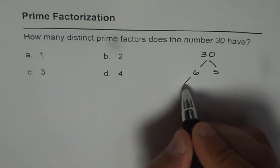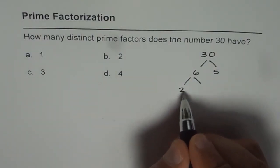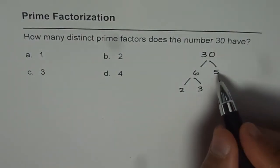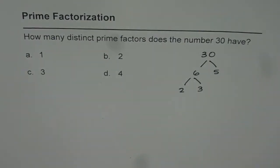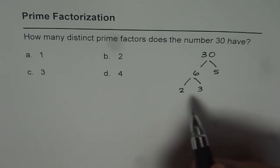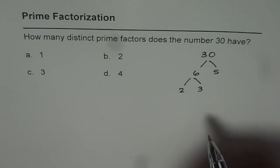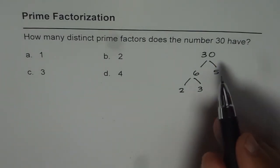Now 6 has factors 2 times 3. 5 itself is a prime number, so it cannot be further factorized. So now we have completed the factorization process of 30.